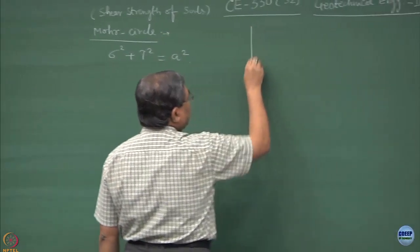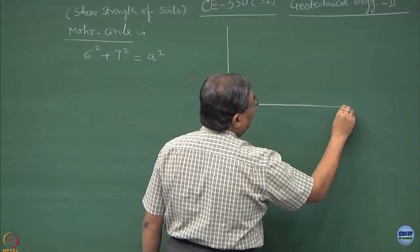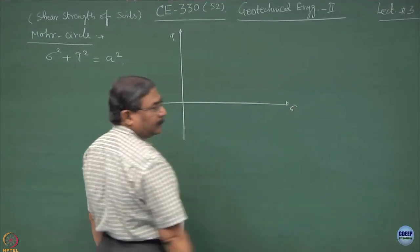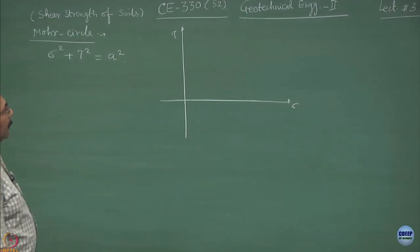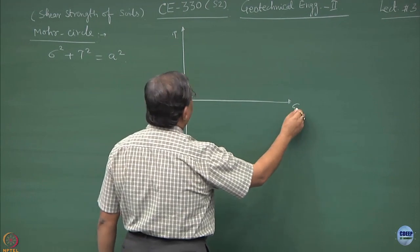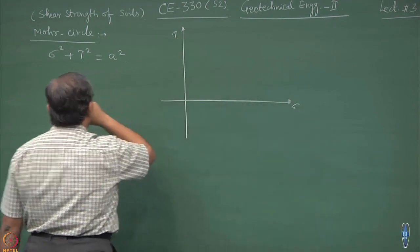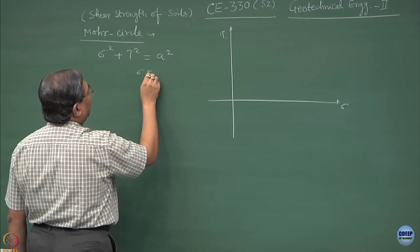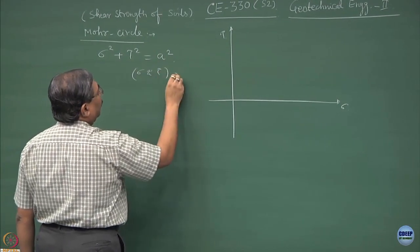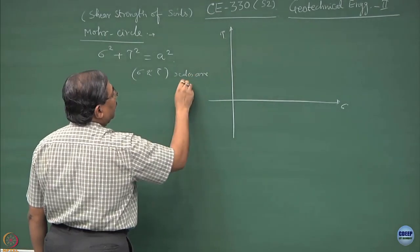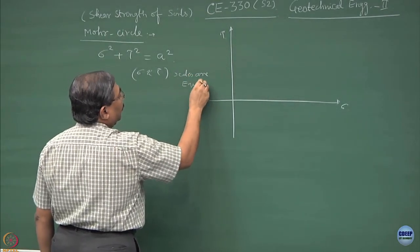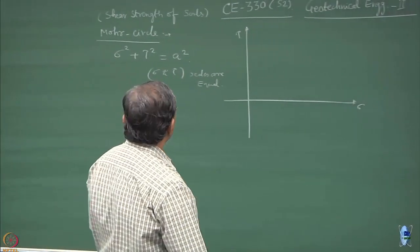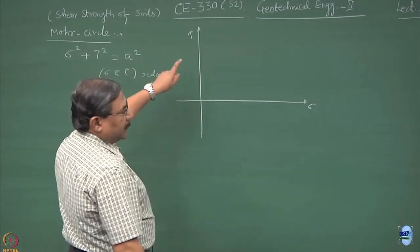The interpretation of the results is that if I put the sigma and tau scales as equal — so sigma scale and tau scale are equal — this is very important to remember. The whole analysis depends upon the fact that sigma and tau scales have to be the same.